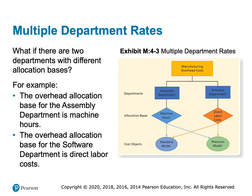A step up from the single plant-wide rate is to use what we call departmental rates. This makes the most sense under a process costing method, though it can work under job order costing too. Under process costing, we move products through departments, so it makes sense to allocate overhead associated with each department within that department — department one overhead in department one, department two overhead in department two.